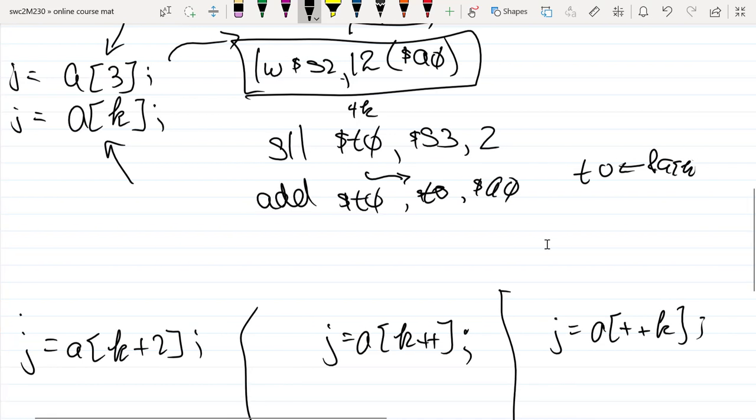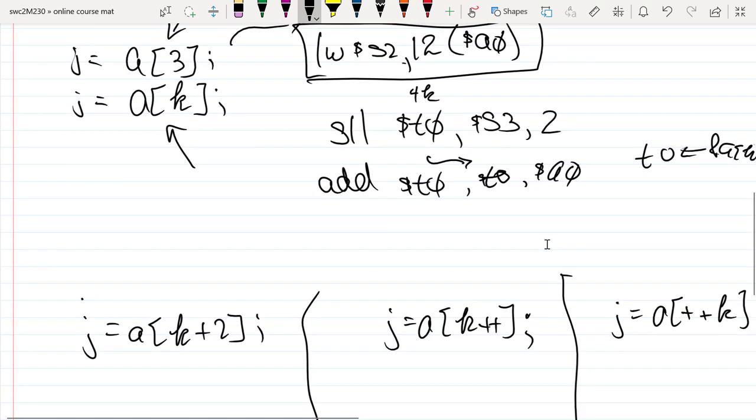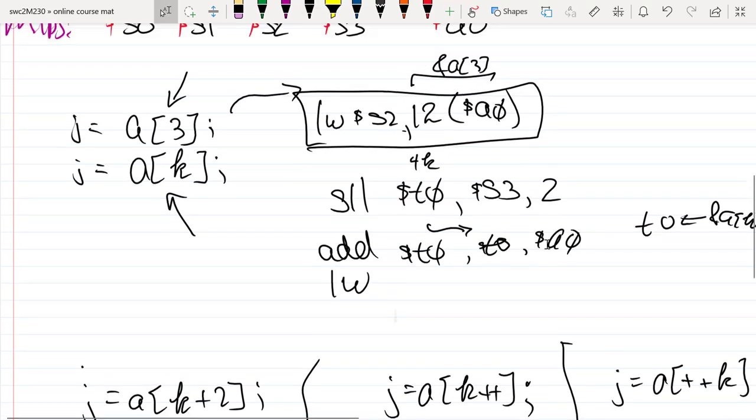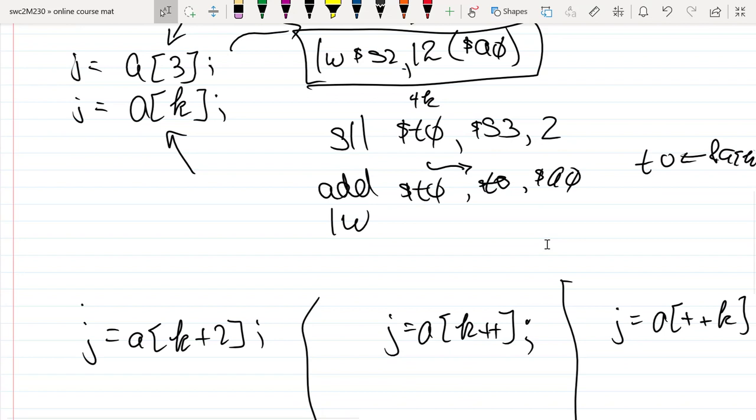And so now I can dereference it by using a load word. I know that I need to store it in j and we've said that j is s2. And I don't have to add anything to that address. I'll just use the address directly with no additional offset, so I'll just use a 0 there. But this t sub 0 is the complete address.